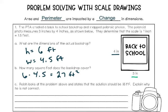Let's look at Part C. Ralph looks at the problem and states the solution should be 18 square feet. Explain what he did and why he is not correct. Take a second and think about that. Here's a hint: he did something with the original photograph — the smaller version. He did something with the area and with the scale factor.